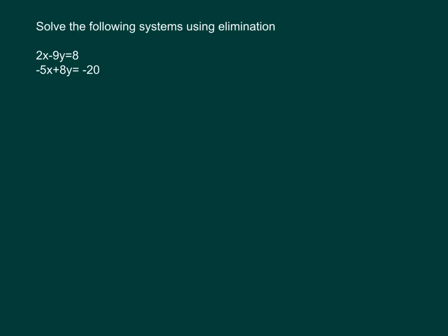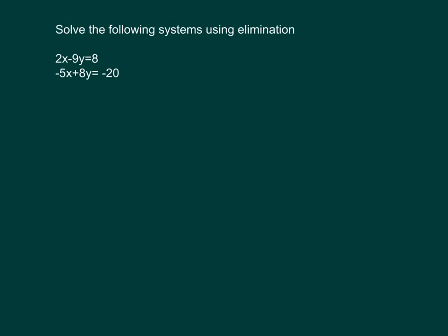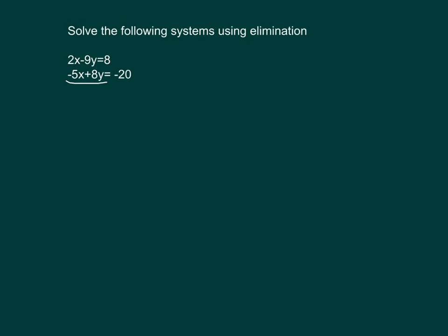So what we're going to want to do here is, like we did in the last video, we're going to want to try to add or subtract these. And I take a look right now, and you can see that if I added these straight down, if I added the 2x and the negative 5x, or the negative 9y and the 8y, nothing is going to eliminate here.